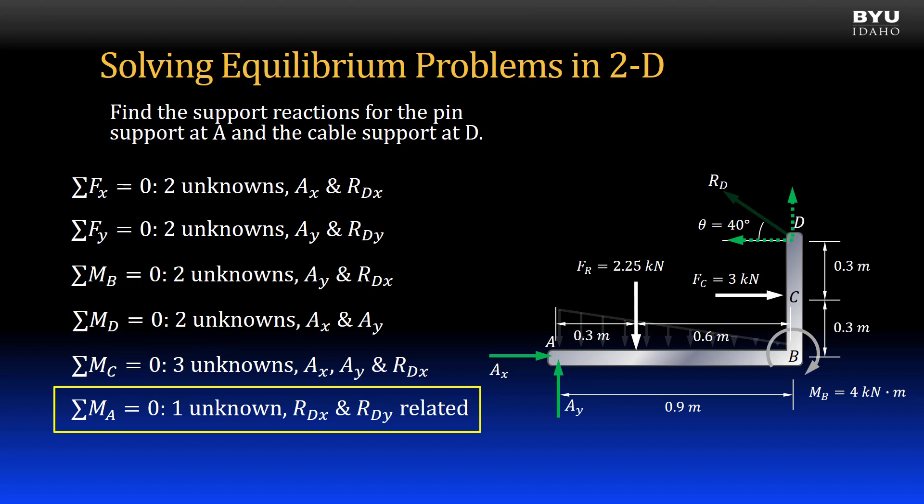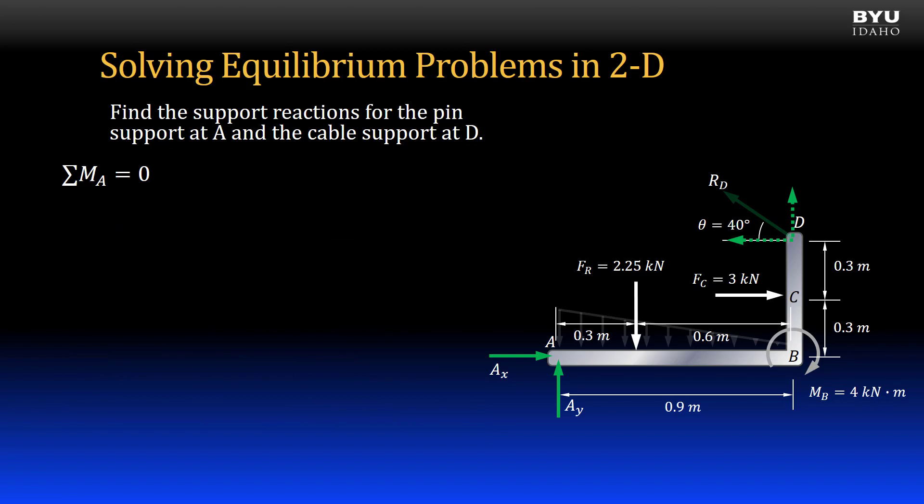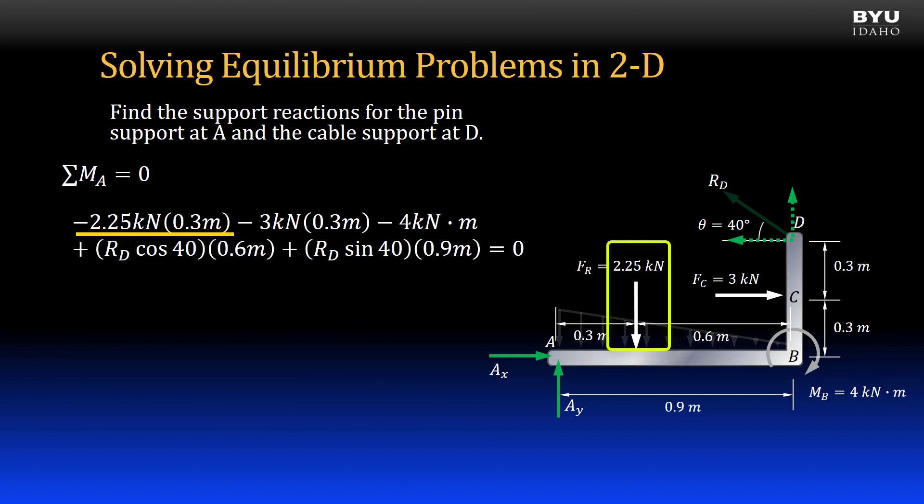Sum moments to zero about point A to find reaction RD. Summing moments about point A, we include the 2.25 kN resultant force times its moment arm from A, 0.3 meters. It is negative by the right-hand rule.